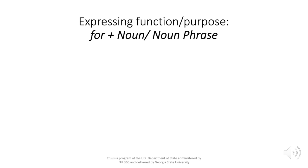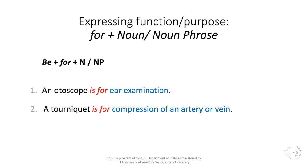Our third way of expressing function is 'for' plus a noun or noun phrase. Here we have just one pattern: B plus 'for' plus the noun or noun phrase. A couple of examples: an otoscope is for ear examination; a tourniquet is for compression of an artery or vein.